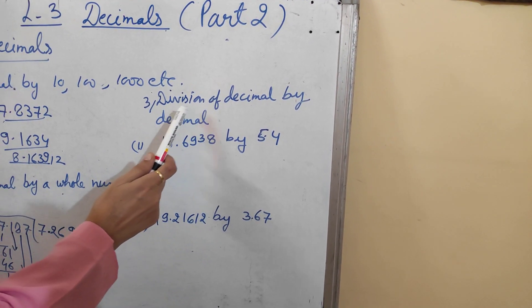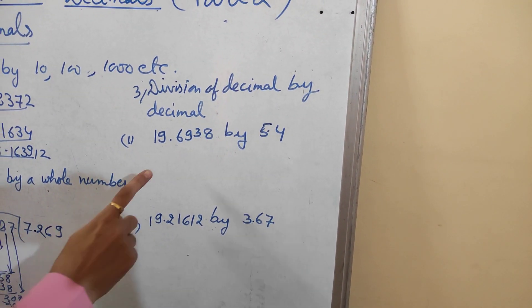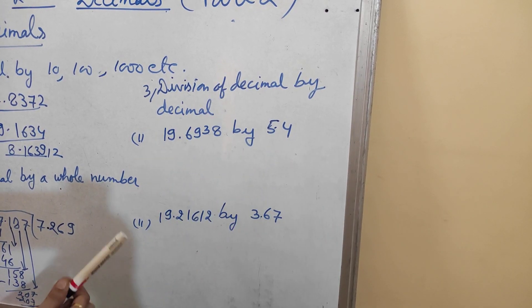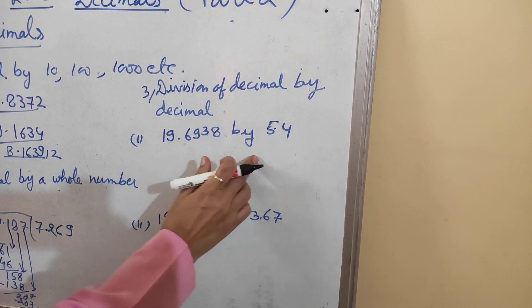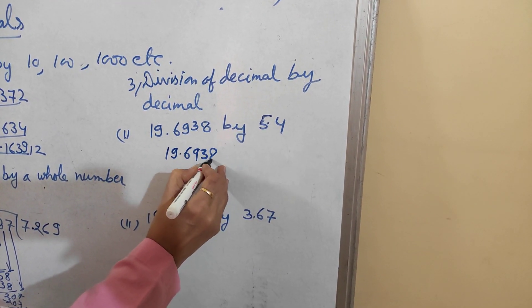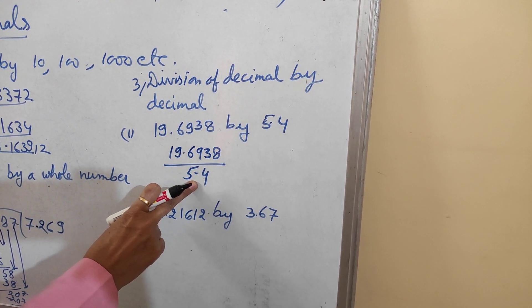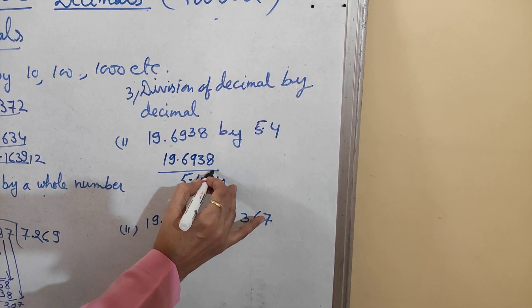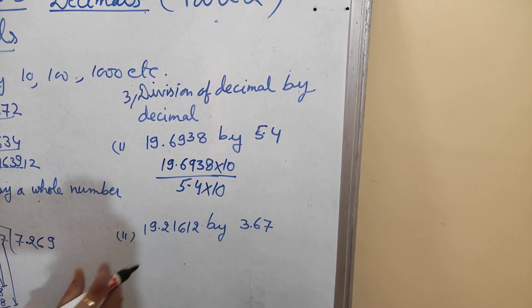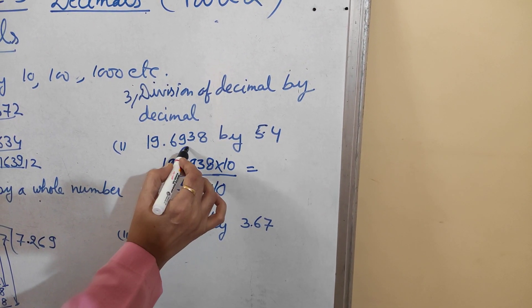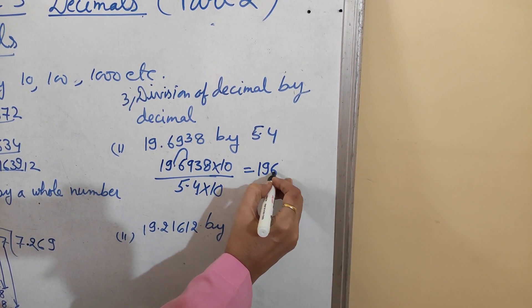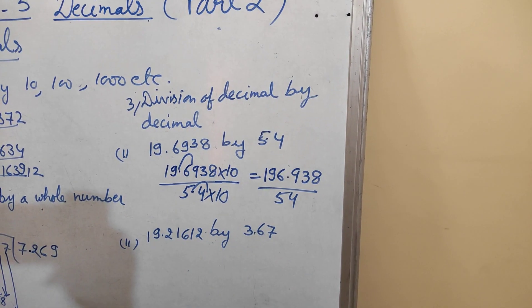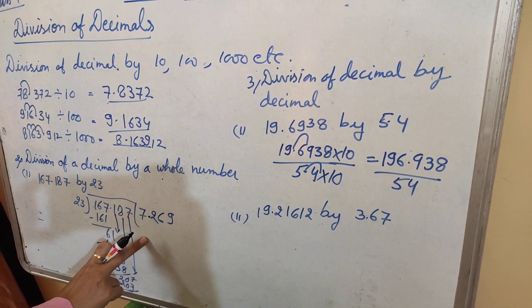The third rule is when we have to do the division of a decimal number by another decimal number. You have to remember that we cannot perform any division if there is a decimal in the divisor. So to remove the decimal from the divisor, we first arrange them in a fractional form. Then, to remove the decimal from the divisor, we multiply the divisor by 10 because there is only one digit after the decimal. When we multiply the divisor by 10, we also multiply the dividend by 10, so the decimal moves one digit to the right — giving 196.938 — and the decimal is removed from the divisor. After that, we follow the same division method as before.